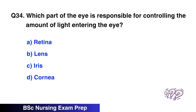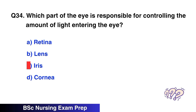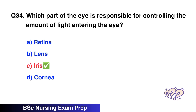Question 34. Which part of the eye is responsible for controlling the amount of light entering the eye? The correct option is C, iris.